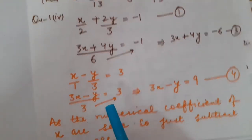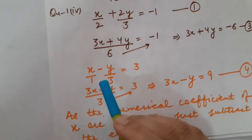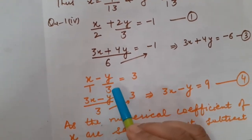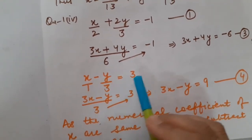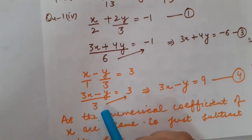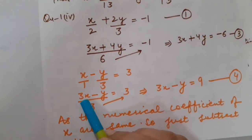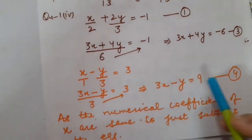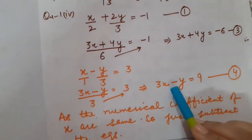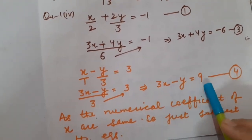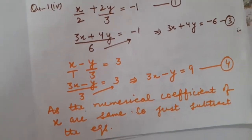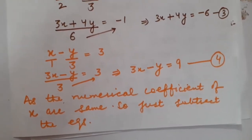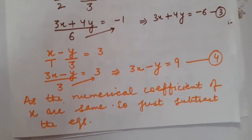In the same manner, solving equation number 2: x upon 1 minus y upon 3 equals 3. After taking 3 as LCM, I have got 3x minus y equals 3. This 3 will be multiplied by 3, giving 3x minus y equals 9. Now please focus on equation number 3 as well as equation number 4.